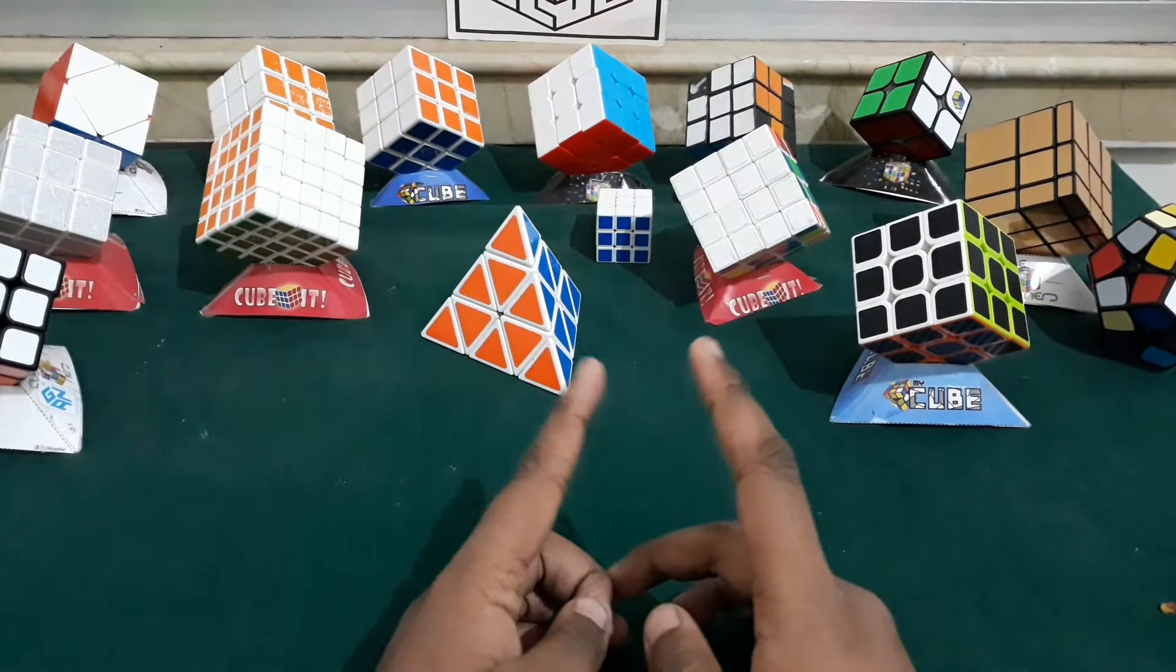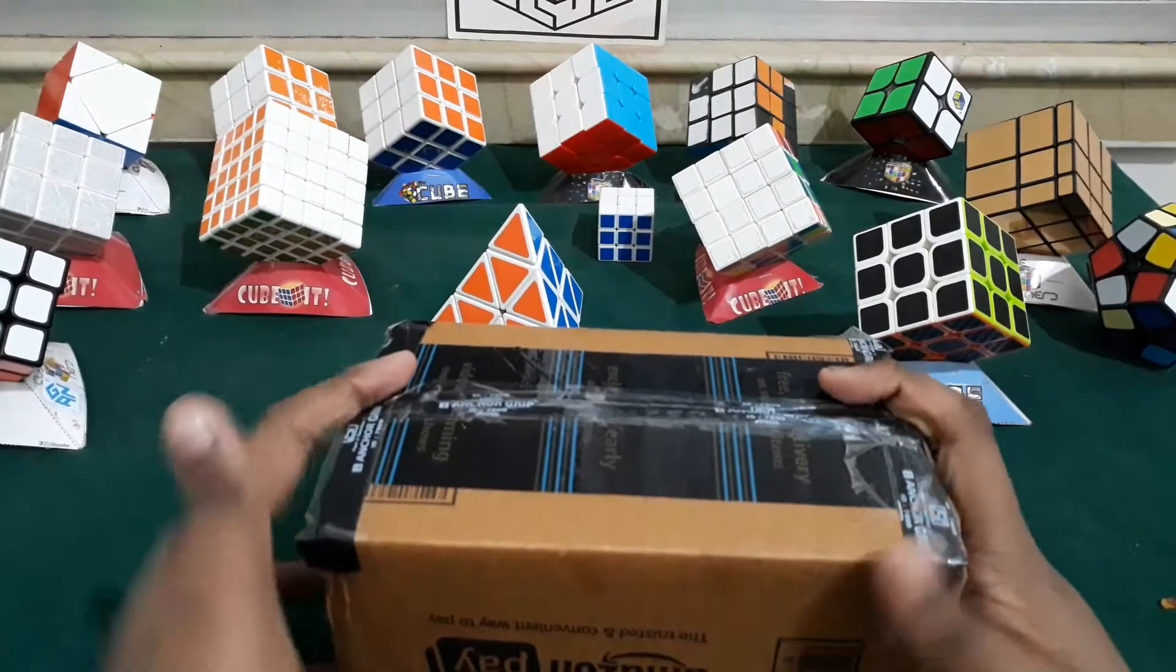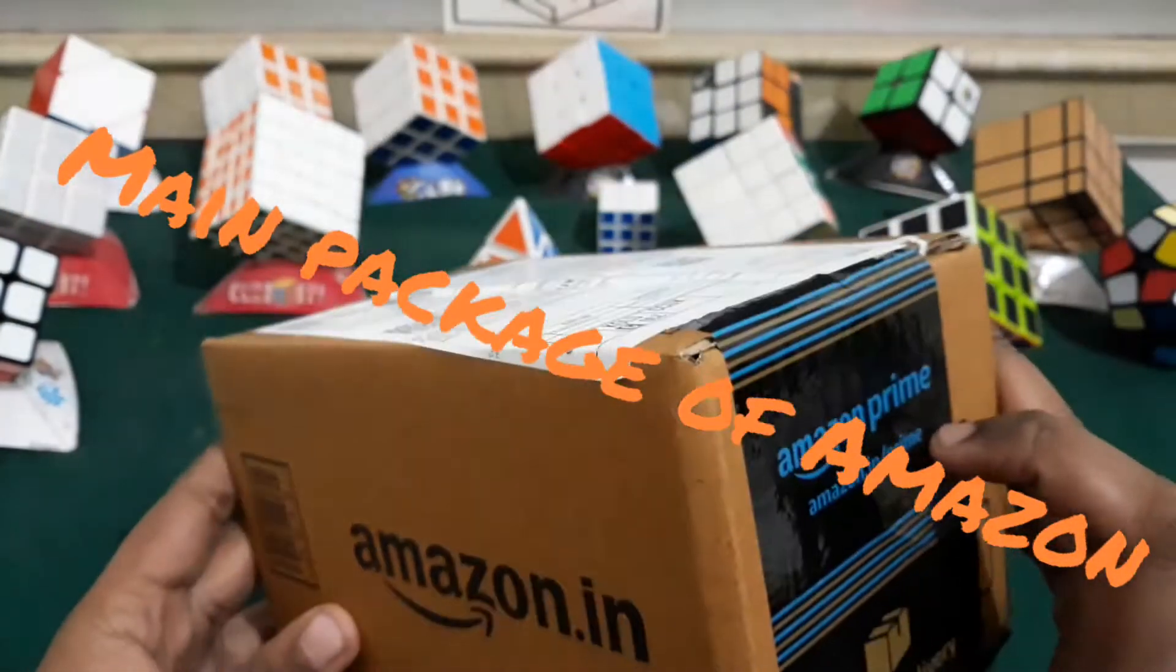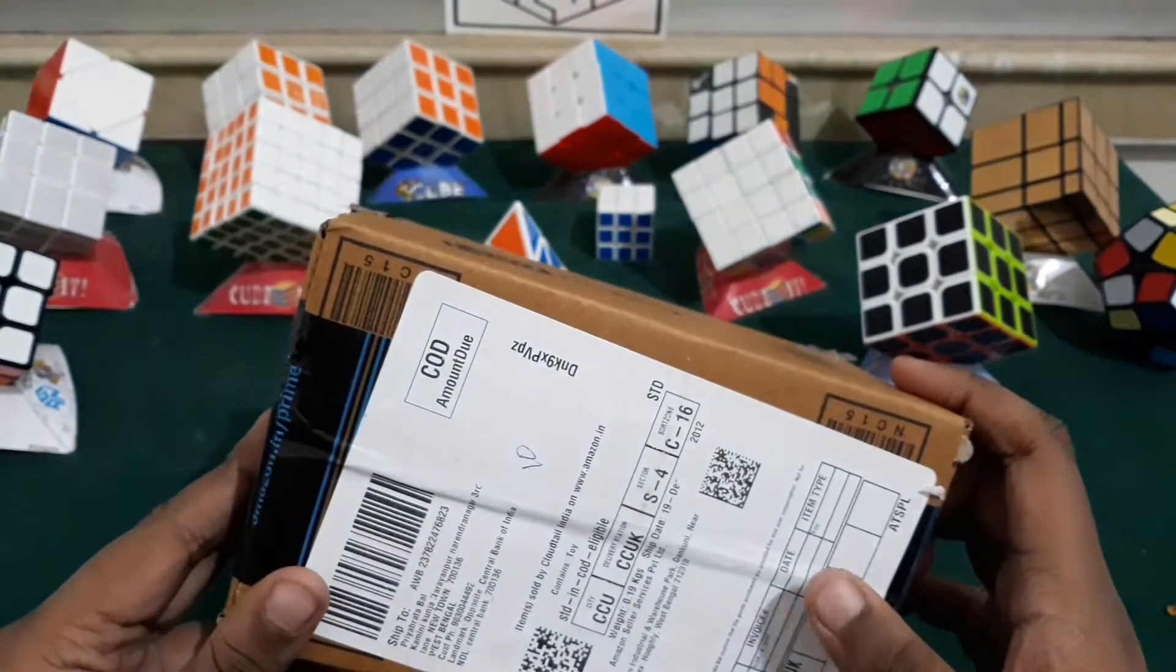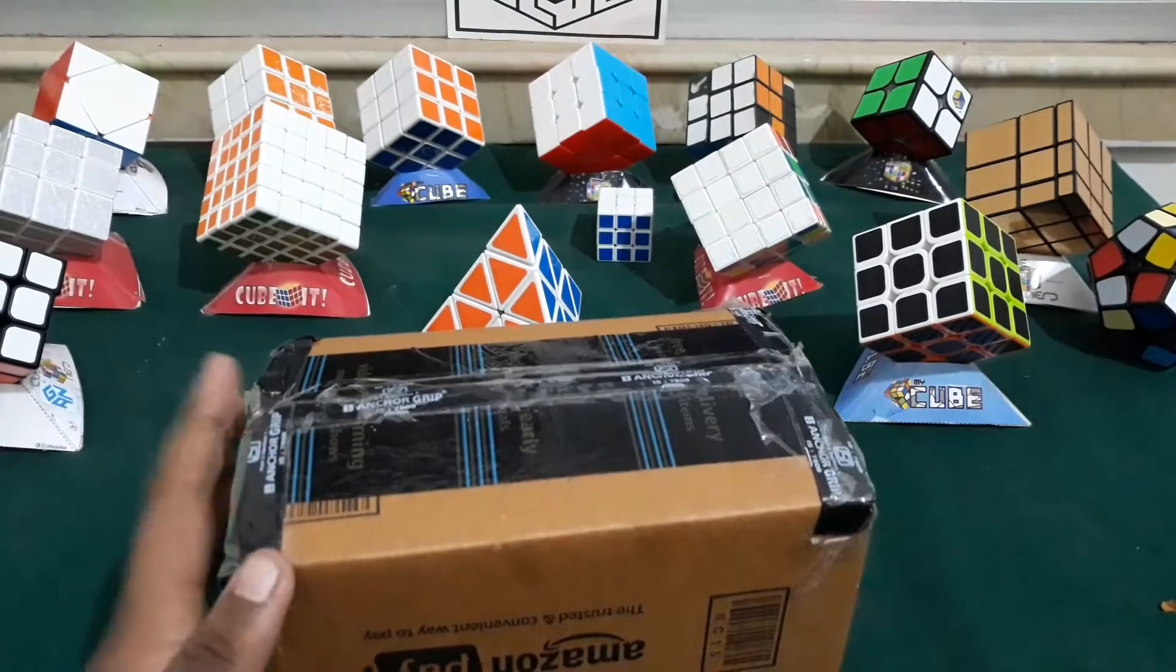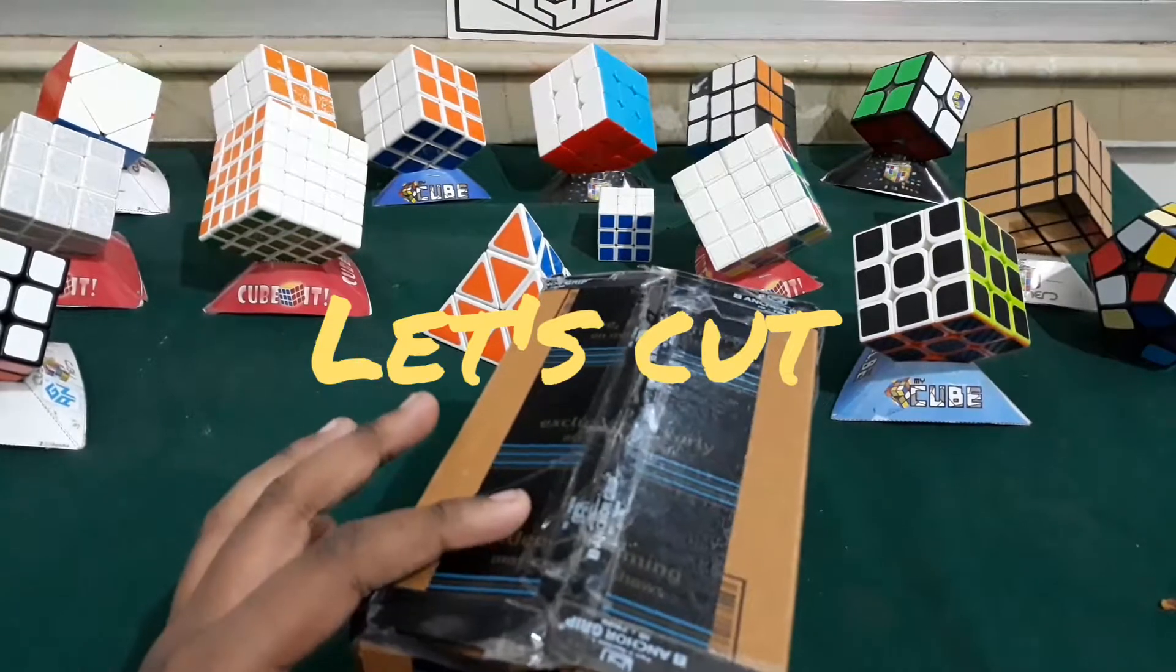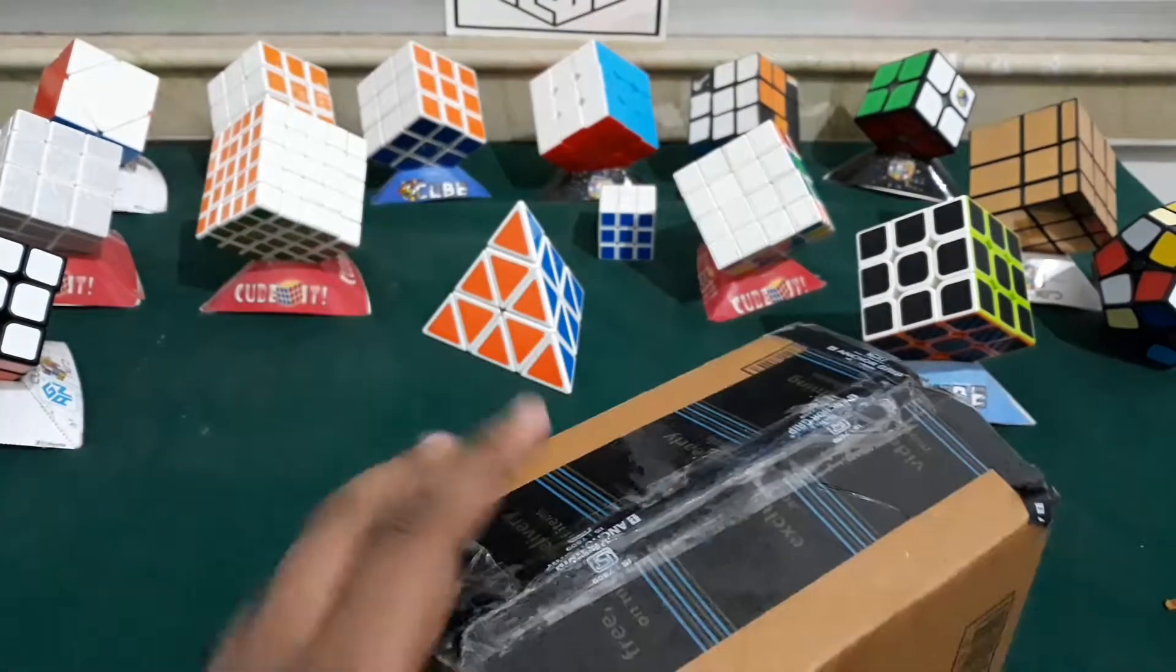So guys, this was my main packaging from Amazon which I bought from Amazon Prime. Here is my bill, here is my name, I am OniKid, this is Amazon. So now I will cut it. Actually, I don't know what this packaging was for because my father ordered it for me. So let's cut.